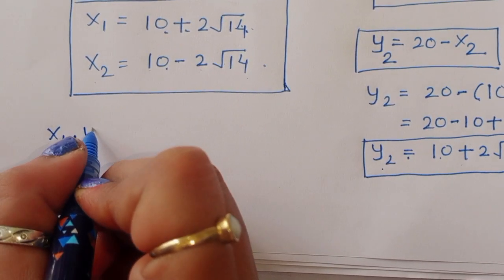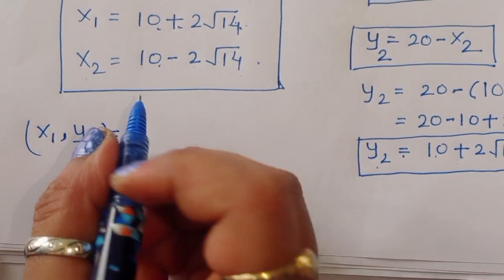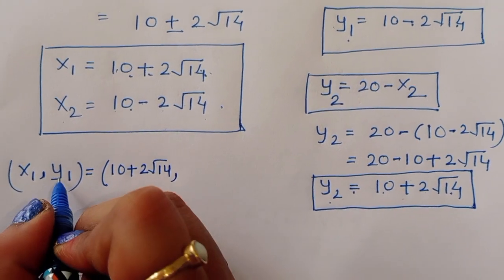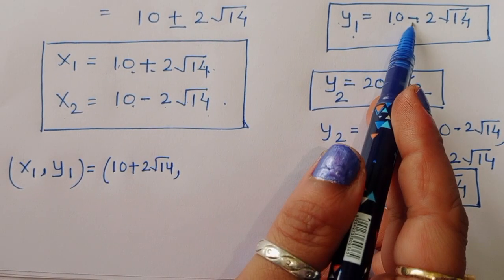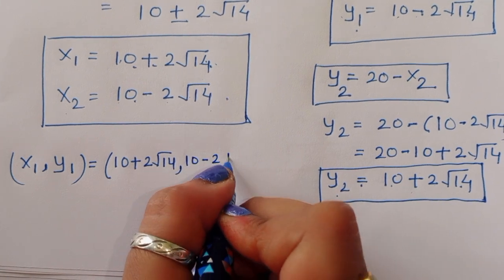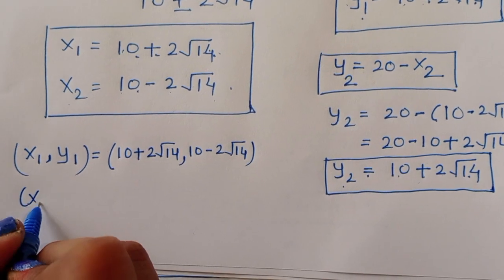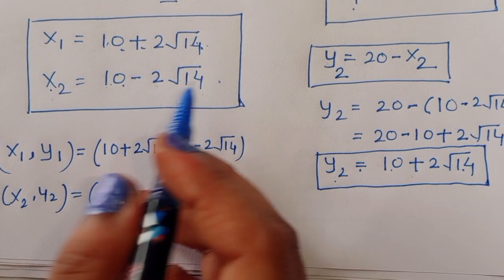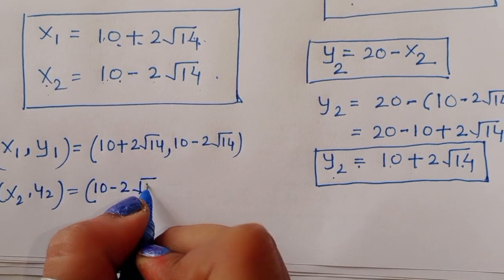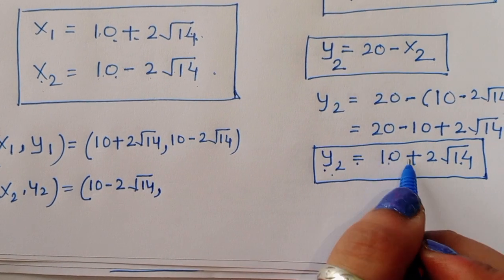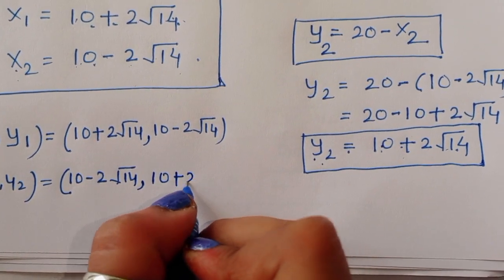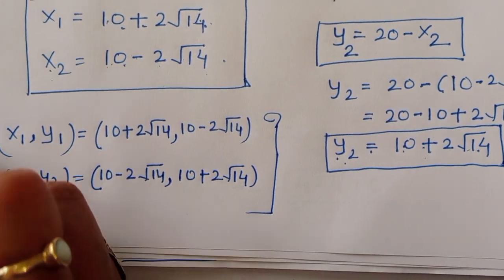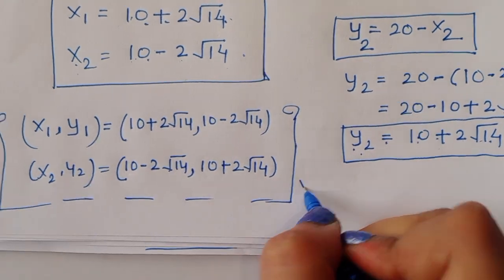So we have two solutions. Solution 1: x₁ equals 10 plus 2 root 14 and y₁ equals 10 minus 2 root 14. Solution 2: x₂ equals 10 minus 2 root 14 and y₂ equals 10 plus 2 root 14. These are the two solutions for x and y. Thank you.